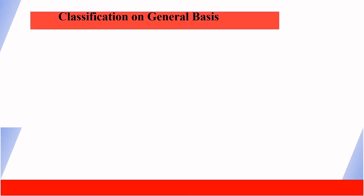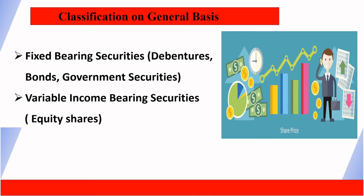Under the general basis classification, fixed income bearing securities include debentures, bonds, and government securities. Variable income bearing securities include equity shares. For debentures and bonds, a specific fixed interest rate is paid. For equity shares, dividend is calculated — so returns are variable. We will focus on solving both types in this chapter.